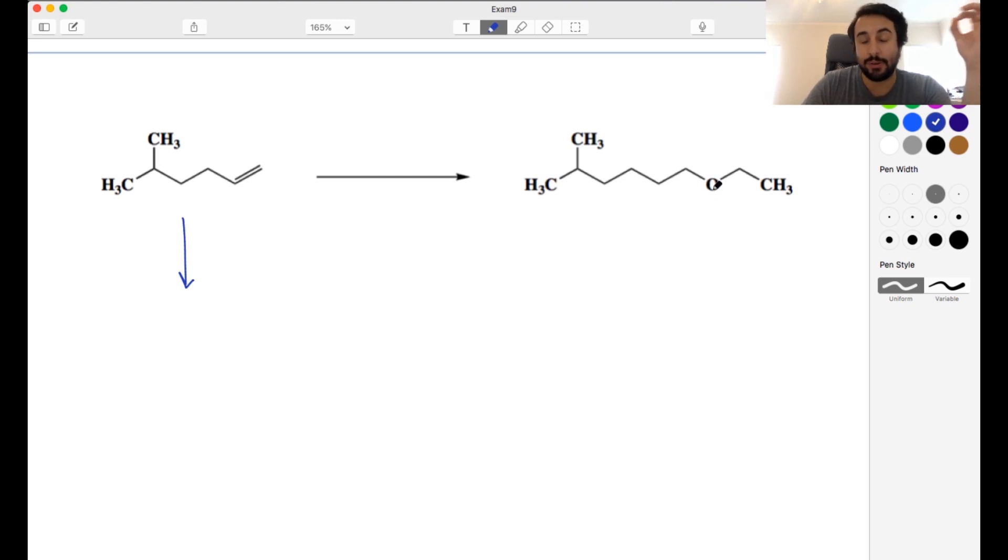So we probably need to do some anti-Markovnikov chemistry. We might want to do an anti-Markovnikov hydration. So that would be first BH3 in THF, and then we need our peroxides to promote the anti-Markovnikov chemistry in hydroxide. And that is how we are going to get the anti-Markovnikov hydration product, because now we have an alcohol, and alcohols are the substrate for Williamson ether synthesis.